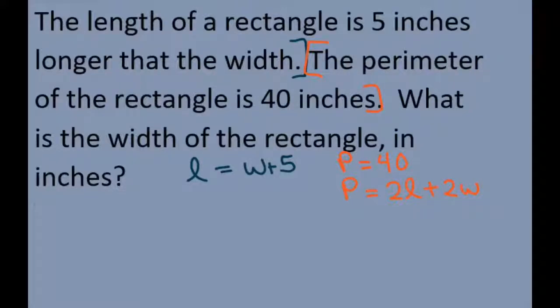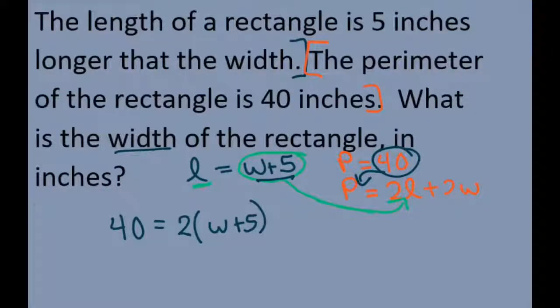Now to solve this, we need to find the width. So I'm going to use substitution, since I have a system of linear equations. I'm going to substitute W plus 5 into my L here. So my perimeter is 40 equals, this goes into the L, so 40 equals 2 times L and L is W plus 5 plus 2W.